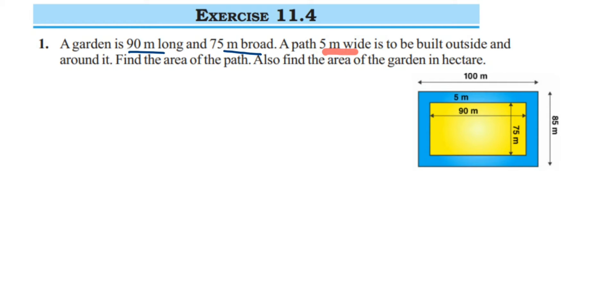The blue color portion you see here is the path which is built around the garden and outside the garden. Since we have been given the 5-meter width, we can find out the whole length of the garden including the path.